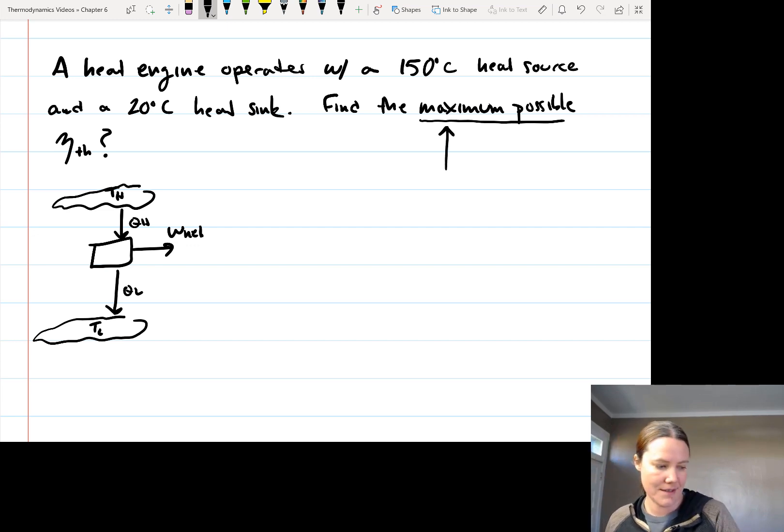So this is really what this is telling you is to find the Carnot thermal efficiency of this heat engine. So the maximum possible means the Carnot cycle efficiency.